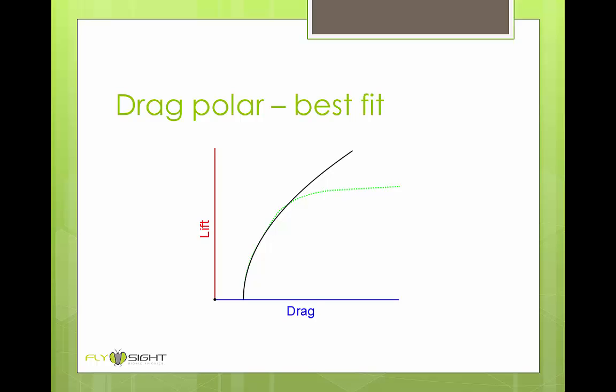As it happens, when we're far away from the stall point, the plot follows a nice curve, which we've shown here as a black line. This is great because we can replace all those measured points with a single theoretical curve.